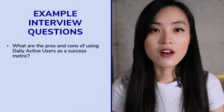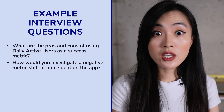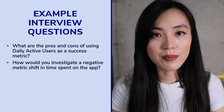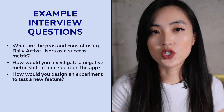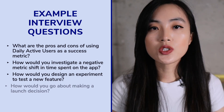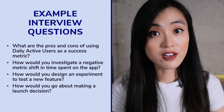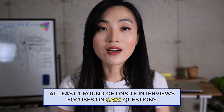Here are some example questions you might encounter: What are the pros and cons of using daily active users as a success metric? How would you investigate a negative metric shift in time spent on the app? How would you design an experiment to test a new feature? If an A/B test shows that the desired metric such as click-through rate is going up while another metric such as clicks is decreasing, how would you make a launch decision?